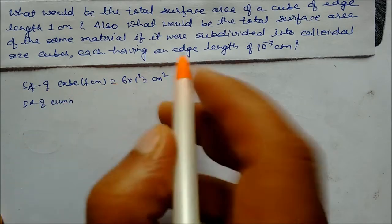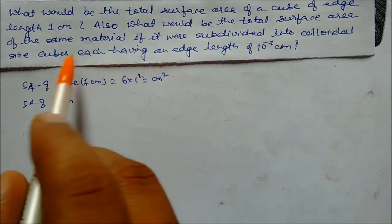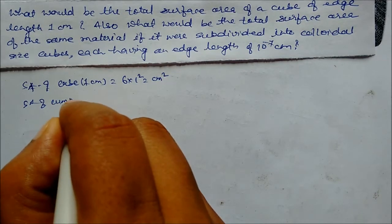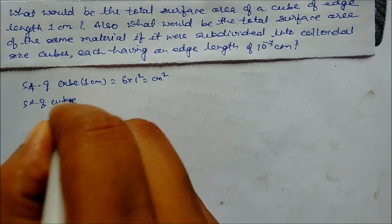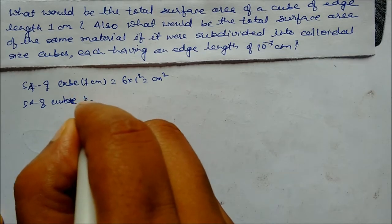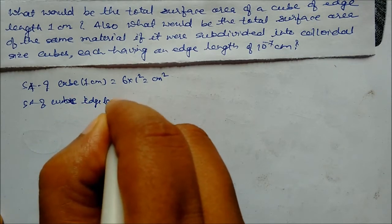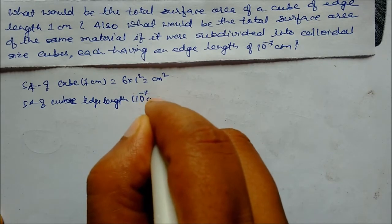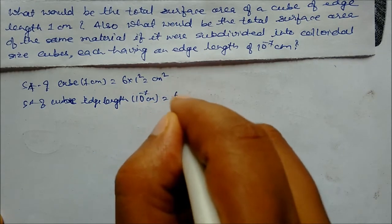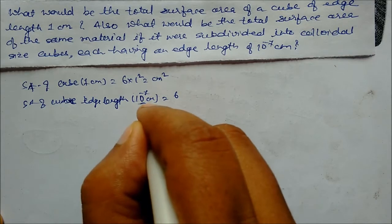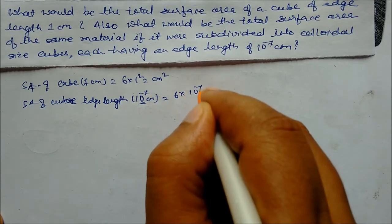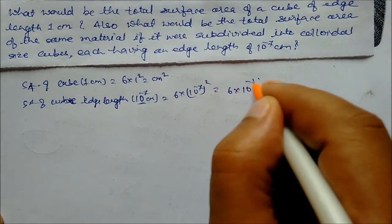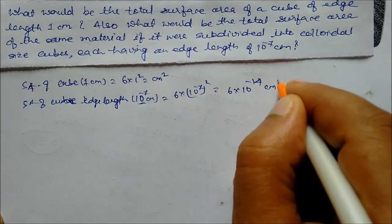Now the same material is divided into small cubes, each having edge length 10 to the power minus 7 cm. So surface area of each small cube: 6 into a squared, where a is 10 to the power minus 7 cm. So each small cube surface area is 6 into (10⁻⁷)² = 6 into 10⁻¹⁴ cm squared.